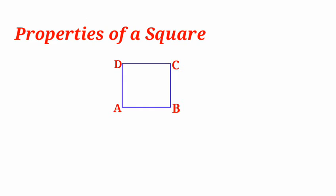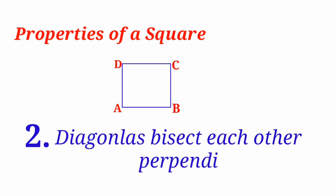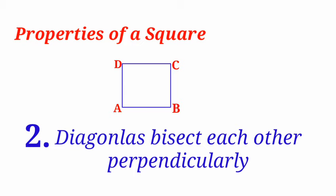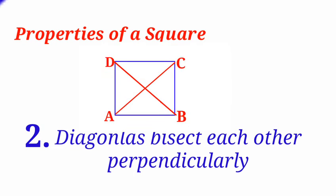Second property: diagonals bisect each other perpendicularly. In a square, there are two diagonals. The two diagonals bisect each other perpendicularly.